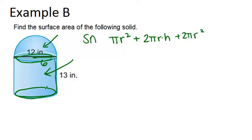So this will be our total surface area. And we just need to substitute in what we know, which is that the radius is 6 inches, and the height is 13 inches. So let's substitute those in.